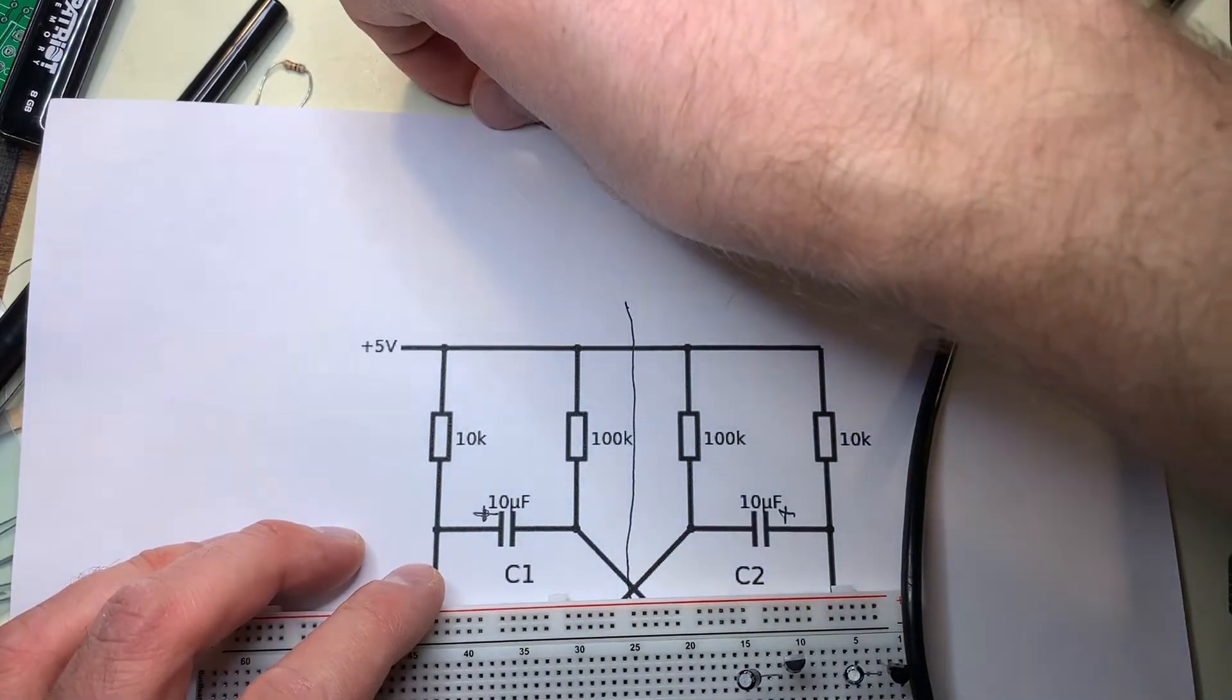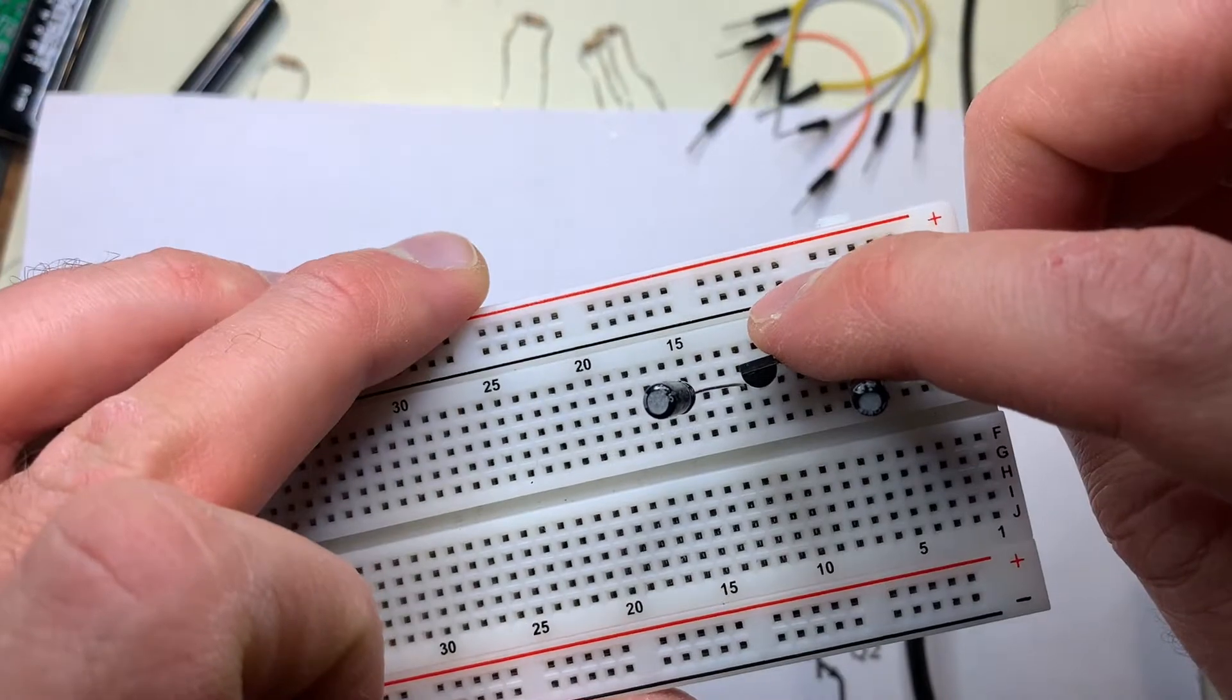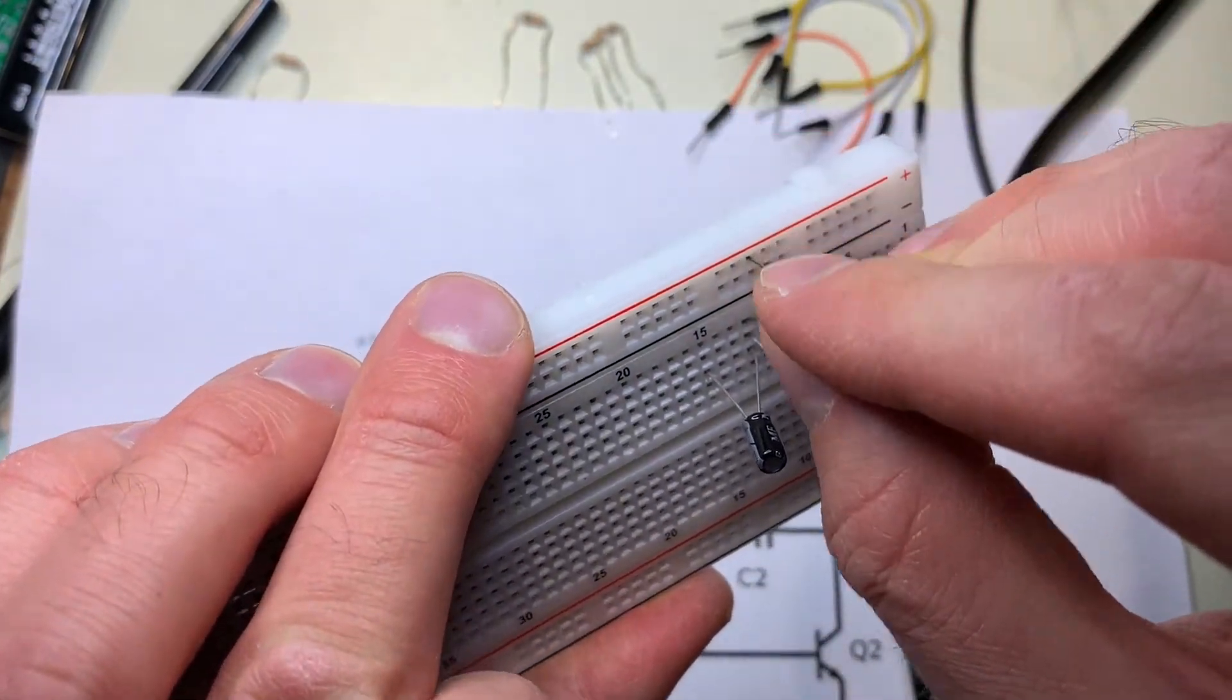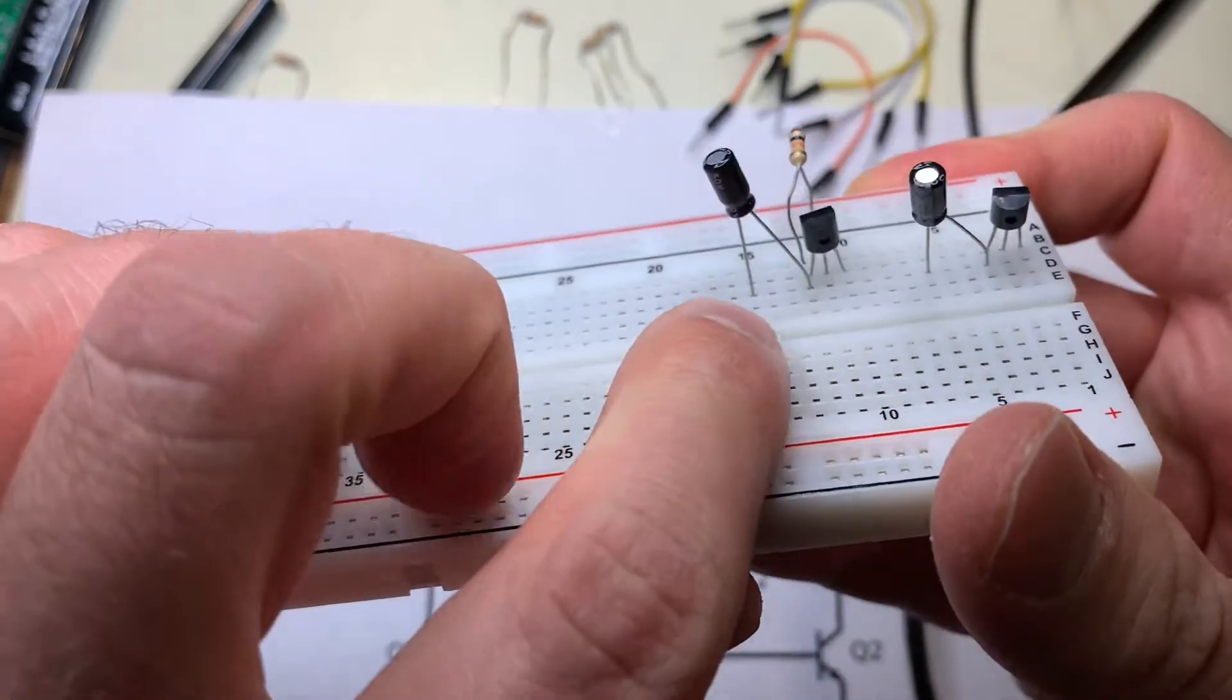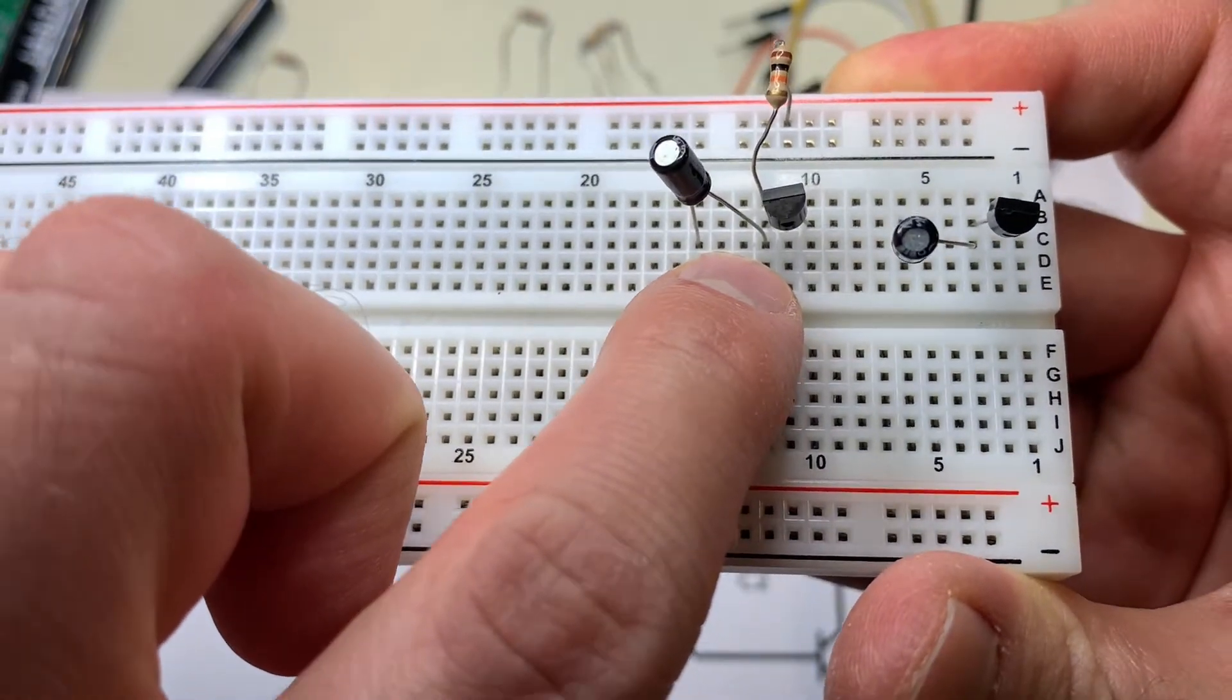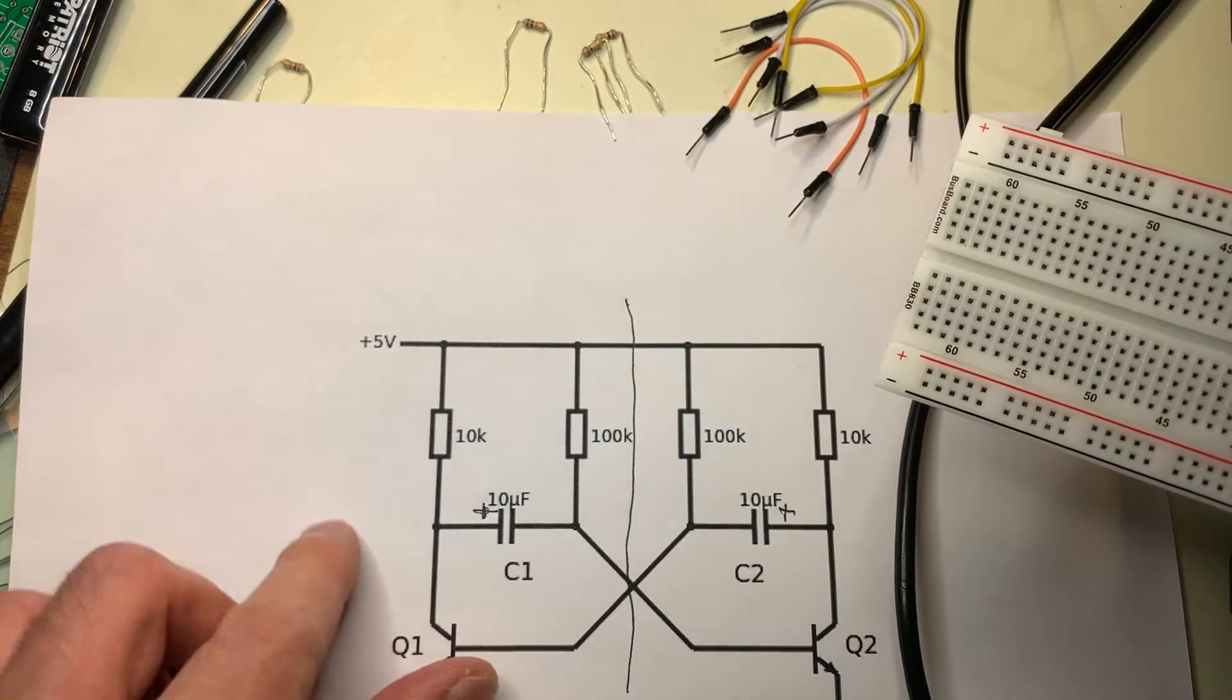So we take our first 10k, and on the positive side of the capacitor, and move it from the positive rail to the same row as the first pin there of the transistor, and the positive of the capacitor.